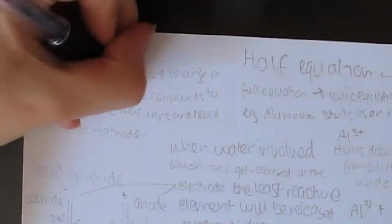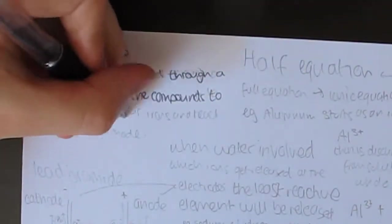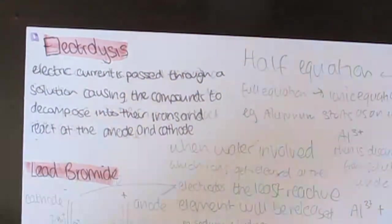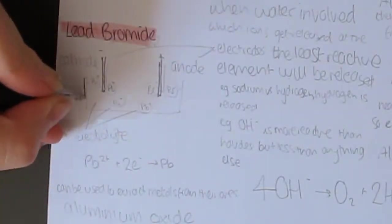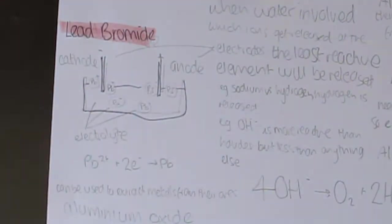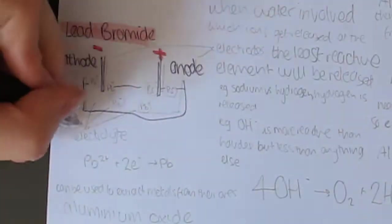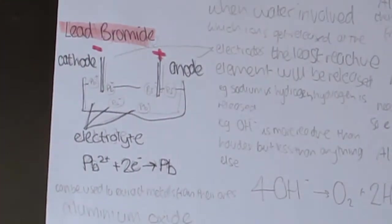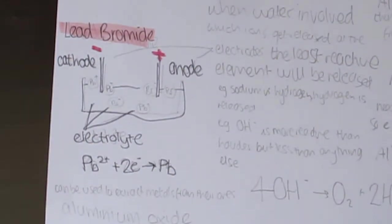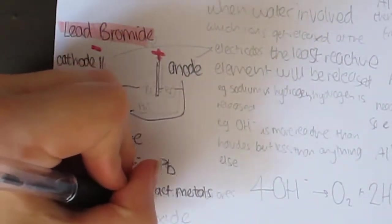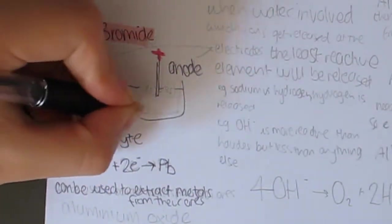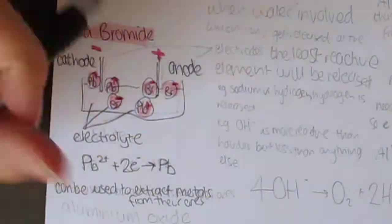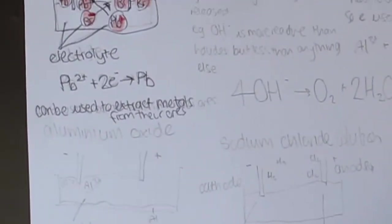Electrolysis is where an electric current is passed through the solution causing the compounds to decompose into their ions and react to the anode and cathode. For example, lead bromide: the lead is attracted to the negative cathode, called an electrode because it's a positive ion, and the bromine is attracted to the positive electrode called the anode because it's a negative ion. The solution in it is called the electrolyte. This can be shown through half equations. For example, Pb2+ plus 2e- makes Pb.